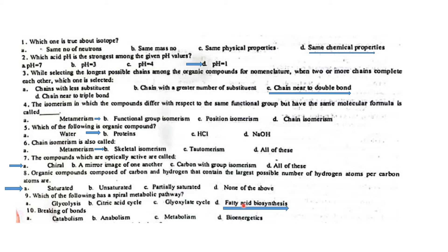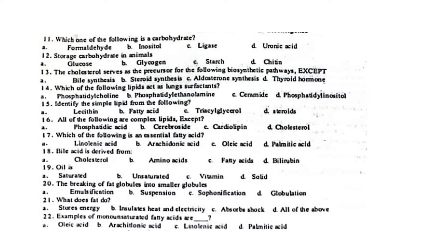The breaking of bonds is called catabolism. Which one of the following is a carbohydrate? It is glycogen — glycogen is the storage form of carbohydrate in animals, while starch is the storage form in plants.